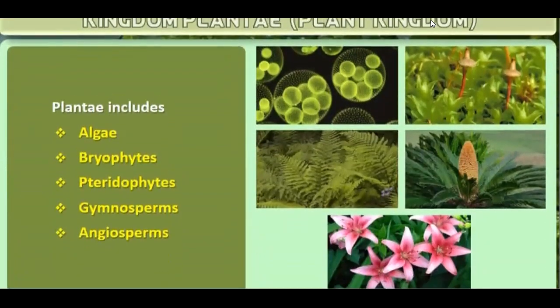The divisions of Plantae are algae, bryophytes, pteridophytes, gymnosperms, and angiosperms — in this evolutionary sequence. Algae are the most primitive; characteristics become progressively advanced through bryophytes and pteridophytes, then gymnosperms, and finally angiosperms, which are the most advanced.